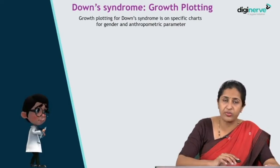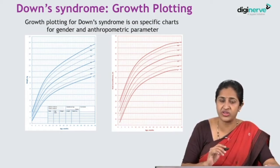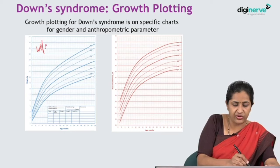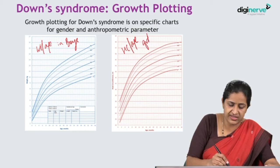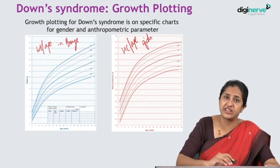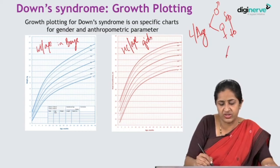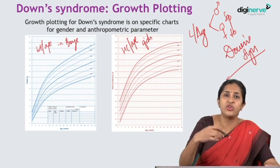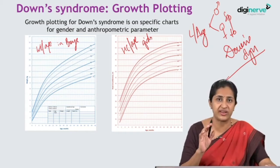Growth plotting in Down syndrome uses specific charts defined for age and various anthropometric parameters. There are weight-for-age charts, head circumference-for-age charts, and length-for-age charts specific to Down syndrome males and females. When you get a Down syndrome case in the exam, do not plot the anthropometry on a normal chart — always use specific Down syndrome charts for plotting anthropometry.